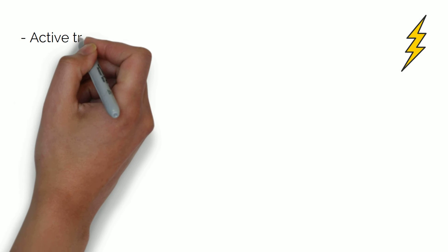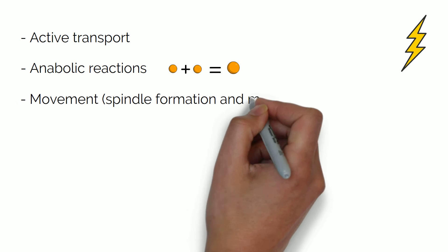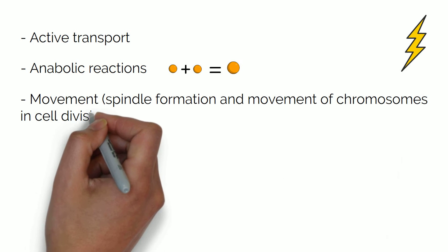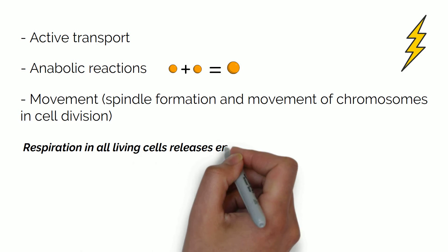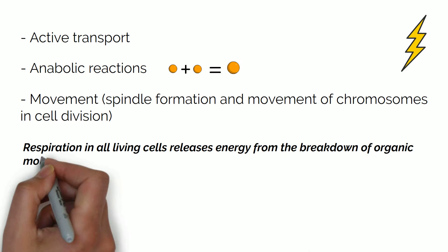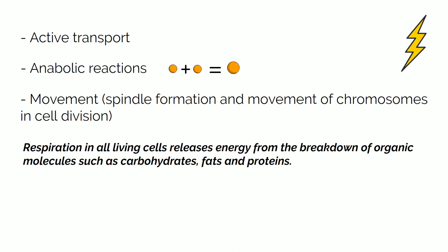Many activities and processes within the cell require energy. For example, active transport, anabolic reactions — which is when lots of small molecules combine to produce larger molecules — or movement such as spindle formation and movement of chromosomes in cell division. Respiration in all living cells releases energy from the breakdown of organic molecules such as carbohydrates, fats and proteins.